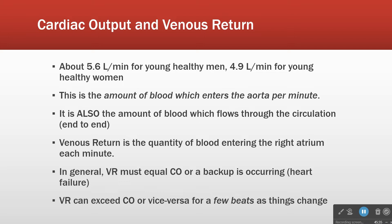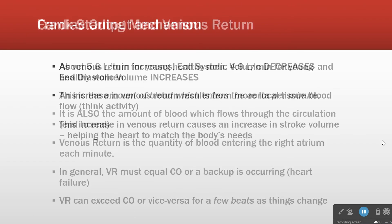Generally, venous return must equal cardiac output. The amount of blood coming back to the heart per minute has to be approximately equal to the amount the heart is pumping out per minute, otherwise you have a backup — which you do see in heart failure. Venous return can exceed cardiac output or the other way around for a few beats or minutes as things change, but in general the amount in equals the amount out.